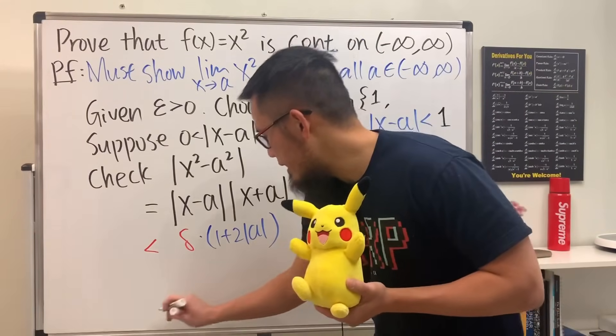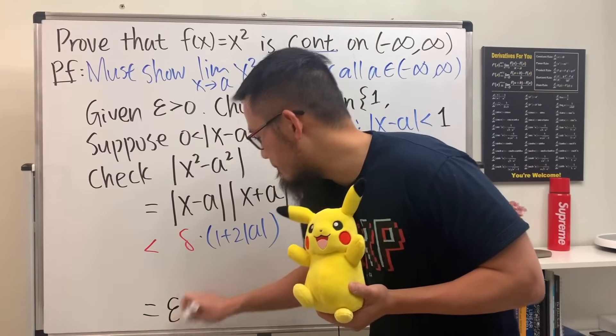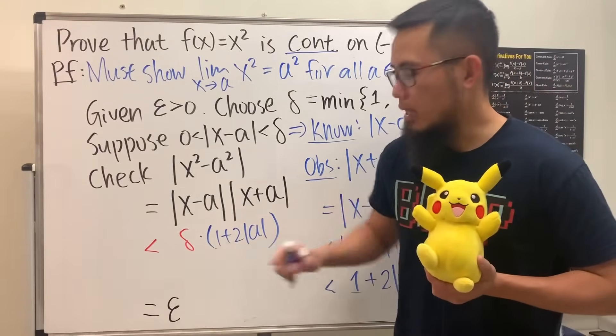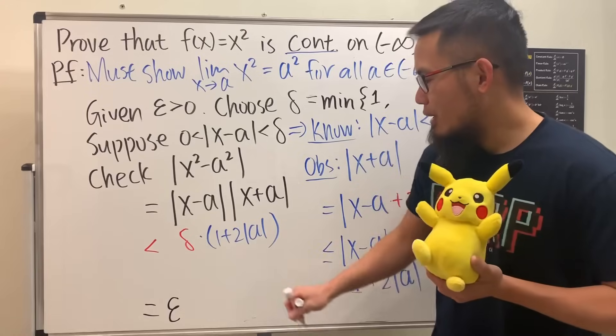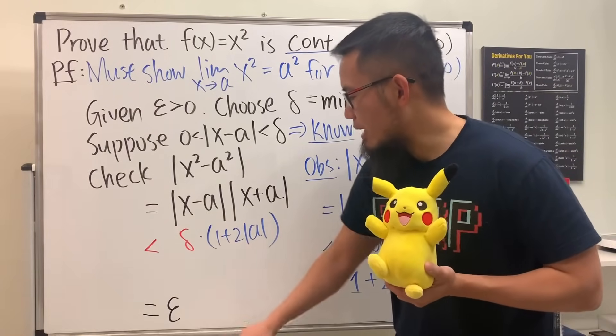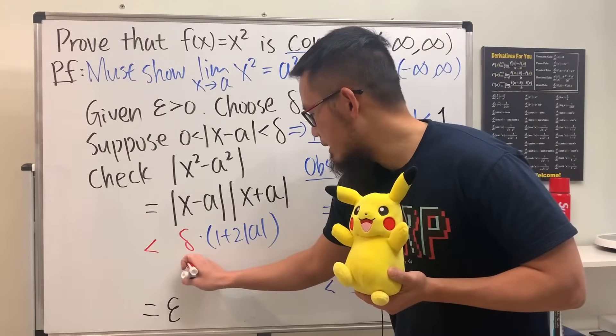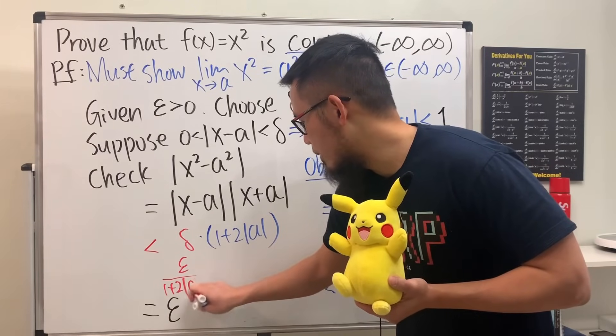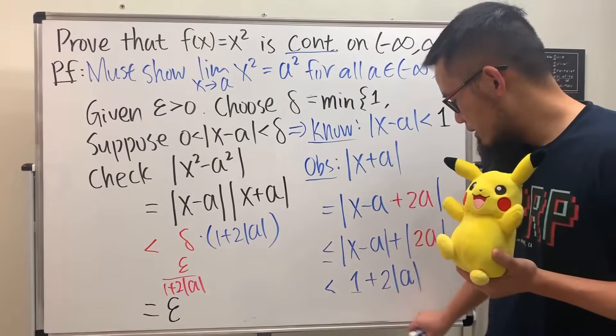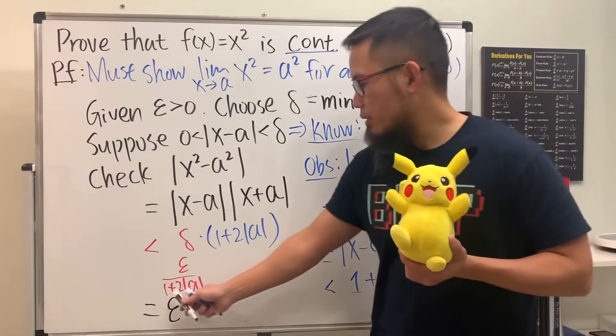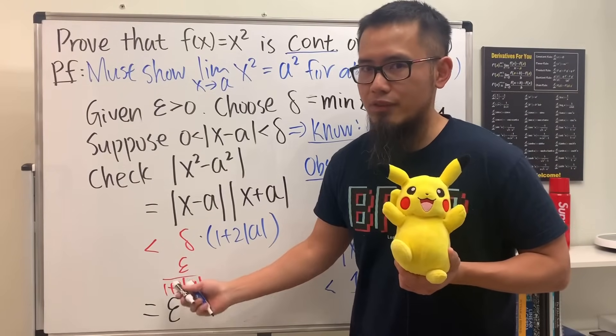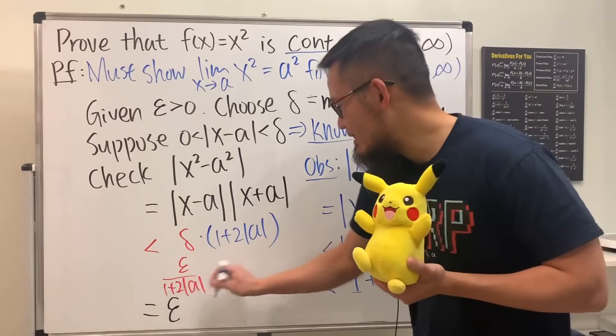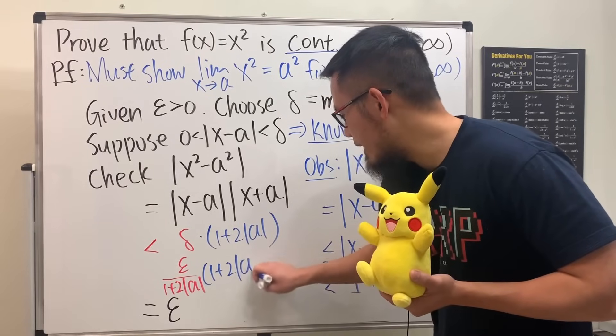Well, keep in mind, eventually we want to end up with epsilon. So now here is the final step. What is this delta going to be? Well, if we want to end up with epsilon, delta is just going to be epsilon over that guy: one plus two absolute value of a. And you see, this right here is so good because the bottom can never be zero. So that's one of the best parts. And you see this right here times one plus two absolute value of a.